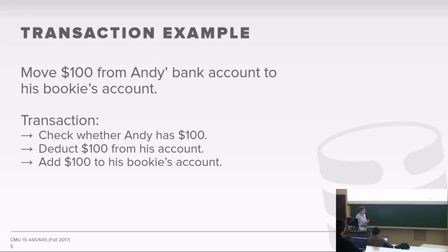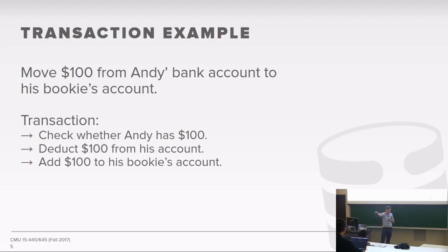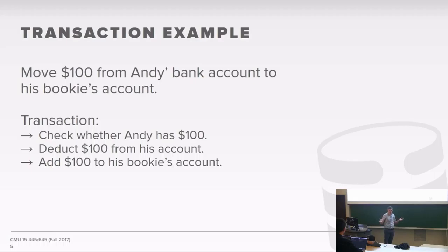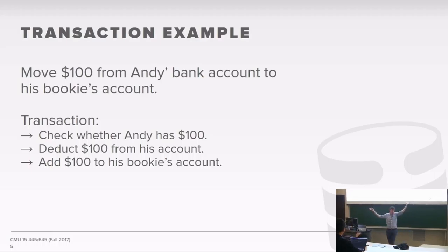Let's use a running example: say I have a gambling problem and I want to take $100 out of my bank account and transfer it to my bookie's account. The steps are: first check I have $100, then take the $100 out, then put it into the bookie's account. This illustrates that a transaction is always the atomic unit of changes in the database — I don't want some steps to succeed and not others. I don't want to take money out of my account and then not put it into the bookie's account, because if I crash, that $100 just disappears, and the bank is losing money.